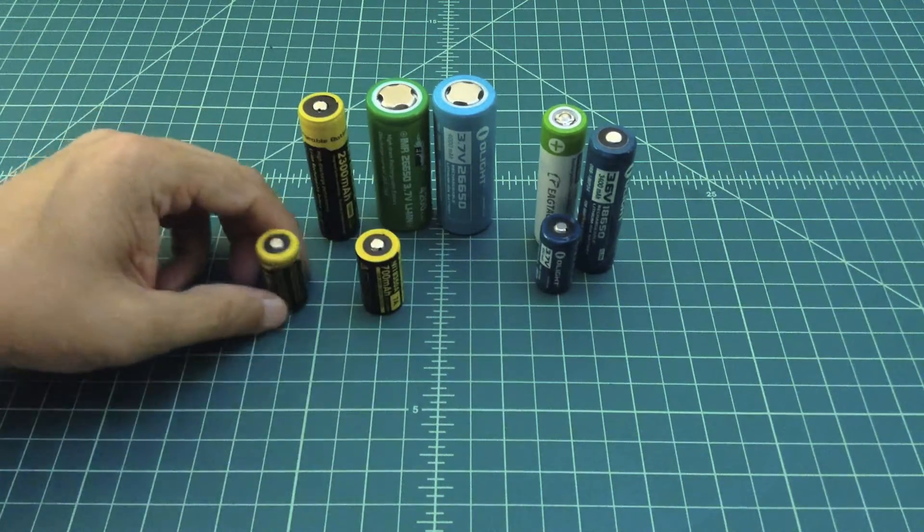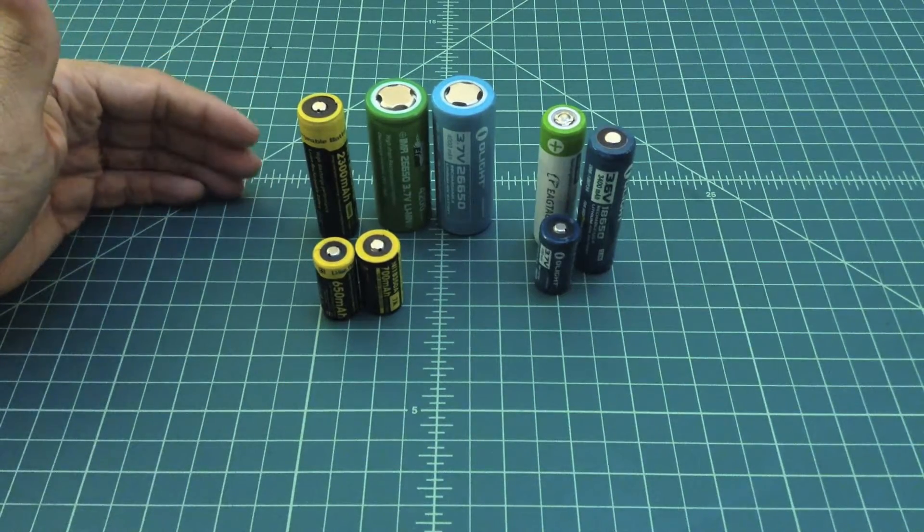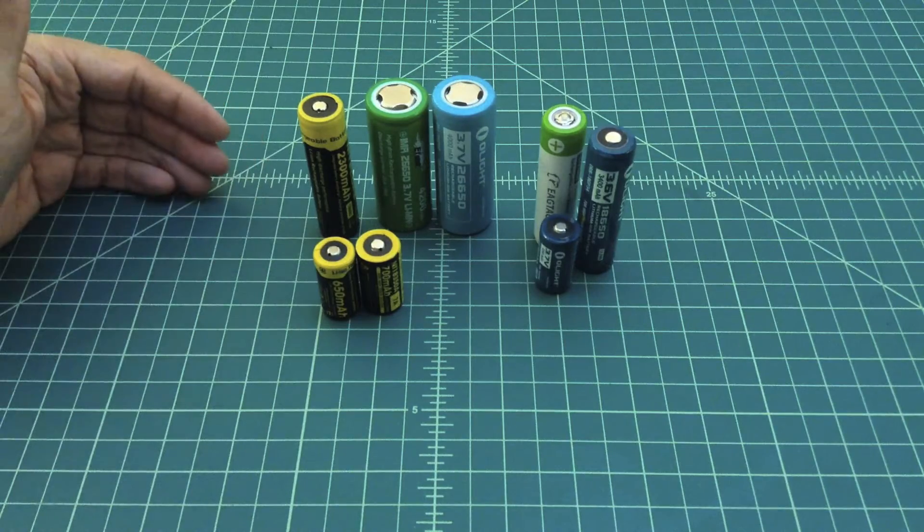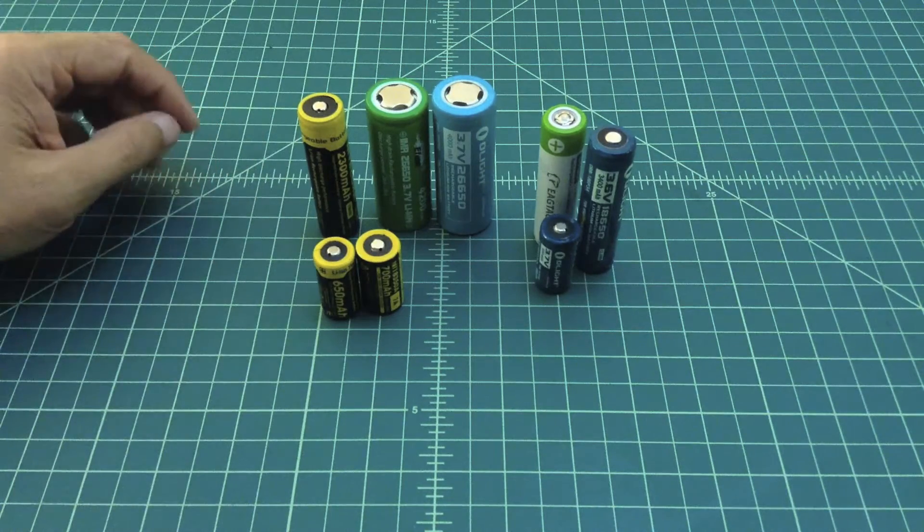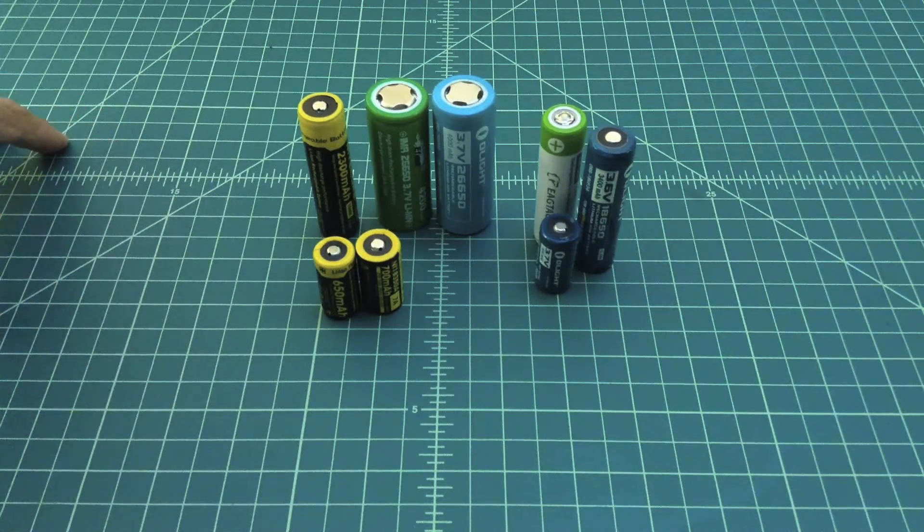Where this became interesting for me is that I recently bought a flashlight and I did a video on that. It was really based around you can put IMR batteries or ICR batteries in flashlights that are not optimized to take advantage of a higher amperage.